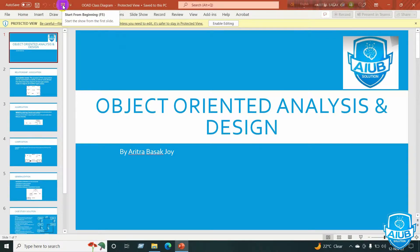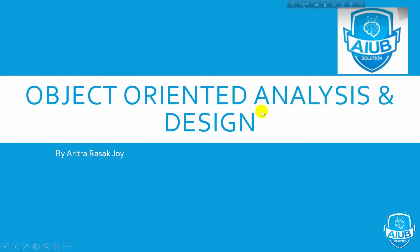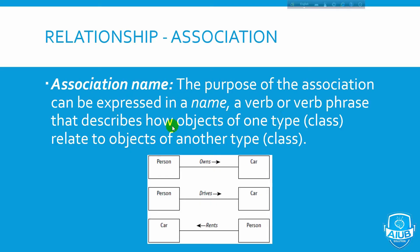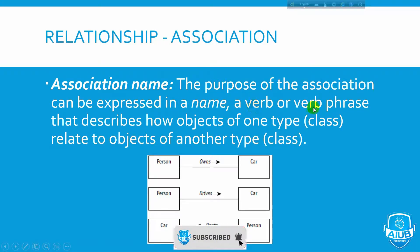Hello everyone, welcome to the tutorial on object analysis and design: part class diagram. What is association? The purpose of the association can be expressed in a name, a verb or verb phrase that describes how objects of one type or class relate to another type or class.